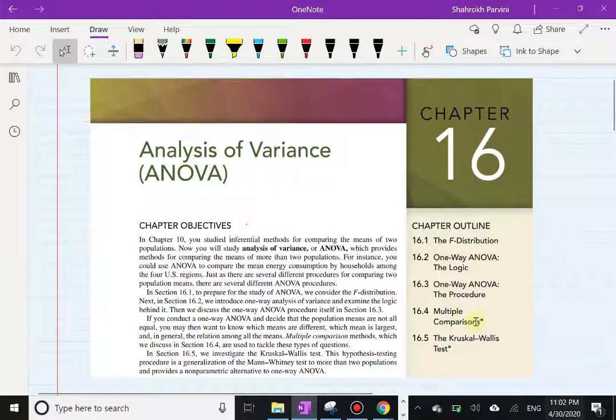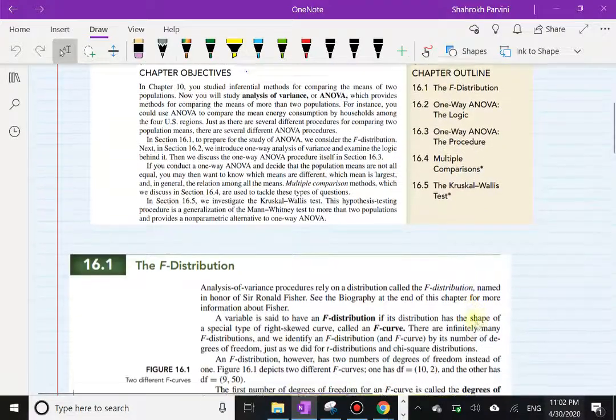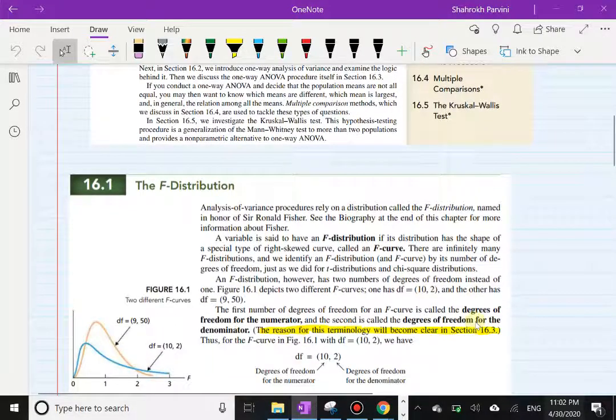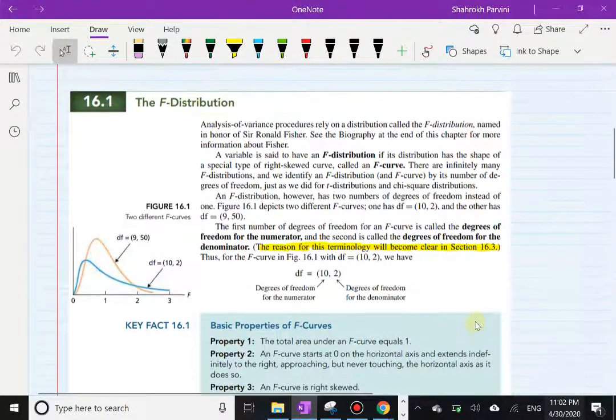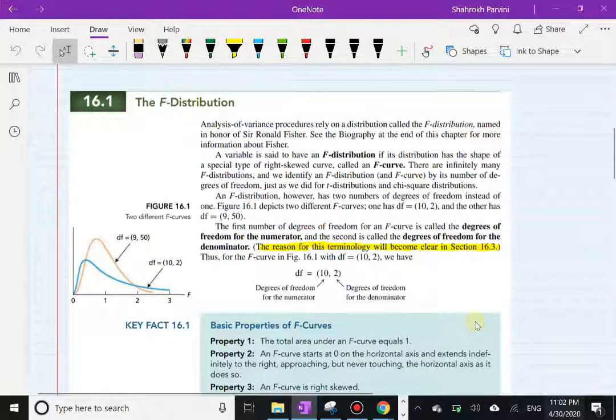So in section 16.1, let's talk about this F distribution. I think this is a relatively easy section and we're going to rely on StatCrunch. In fact, throughout the entire Chapter 16 we're going to rely on StatCrunch. We're not going to do anything by hand.